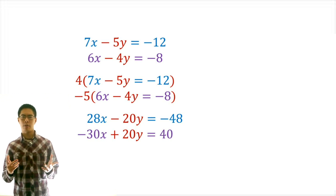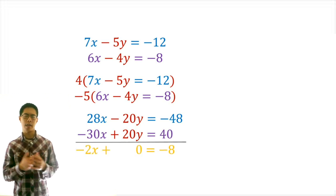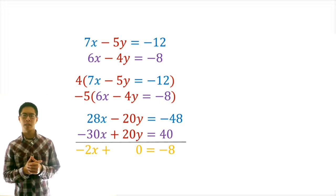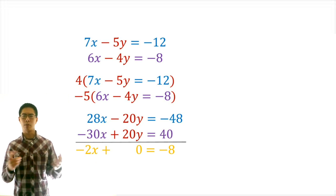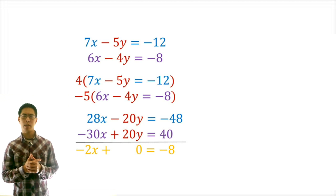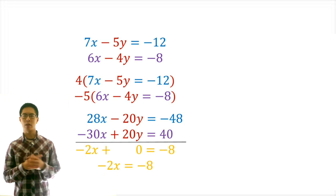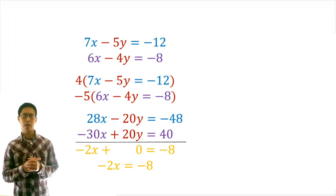Step 3, we add the two equations together. So we get 28x plus negative 30x equals negative 2x, negative 20y plus 20y equals 0, and negative 48 plus 40 equals negative 8. So we end up with negative 2x equals negative 8.